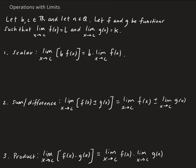The first property is the scalar property. If we have the limit of B — remember B is just a number — times the function, we can actually take the constant outside the limit. So then we know, by definition, the limit of F is L, and this just becomes B times L. So that's the scalar property: you can take the scalar outside of the limit.